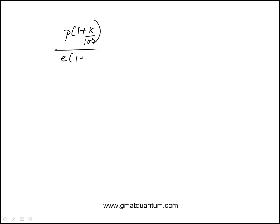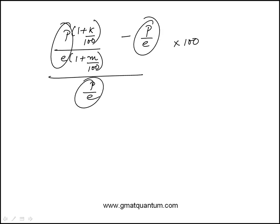E times 1 plus M over 100. So that's the, after the increase, original is P over E divided by P over E times 100. And actually, if we can factor P over E, we'll just strike out.